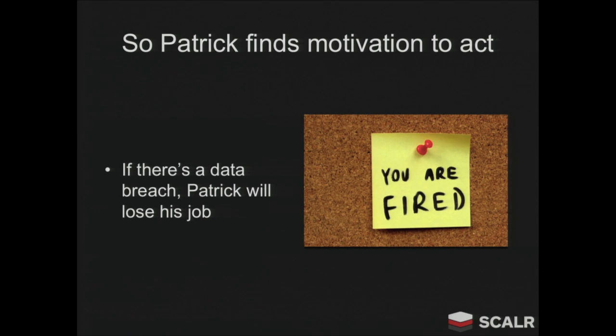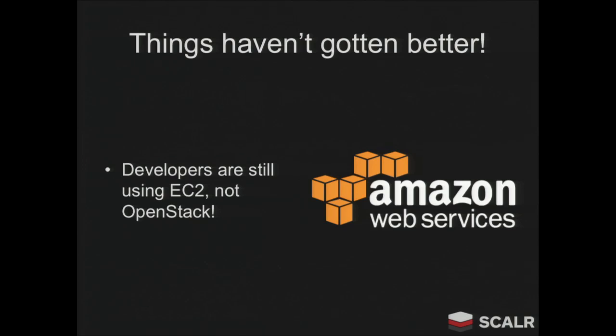Patrick realizes that this is going to get them fired. This isn't good for the company at all. So he gets motivated. He goes to Portland, decides his developers need a cloud — some sort of sandbox, a secure environment where they can do their tests and run everything. He downloads OpenStack, installs it in his infrastructure. So what happens after six months? Things haven't gotten any better. His developers are still using EC2. They just don't care much for OpenStack. It's just too hard for them to use.